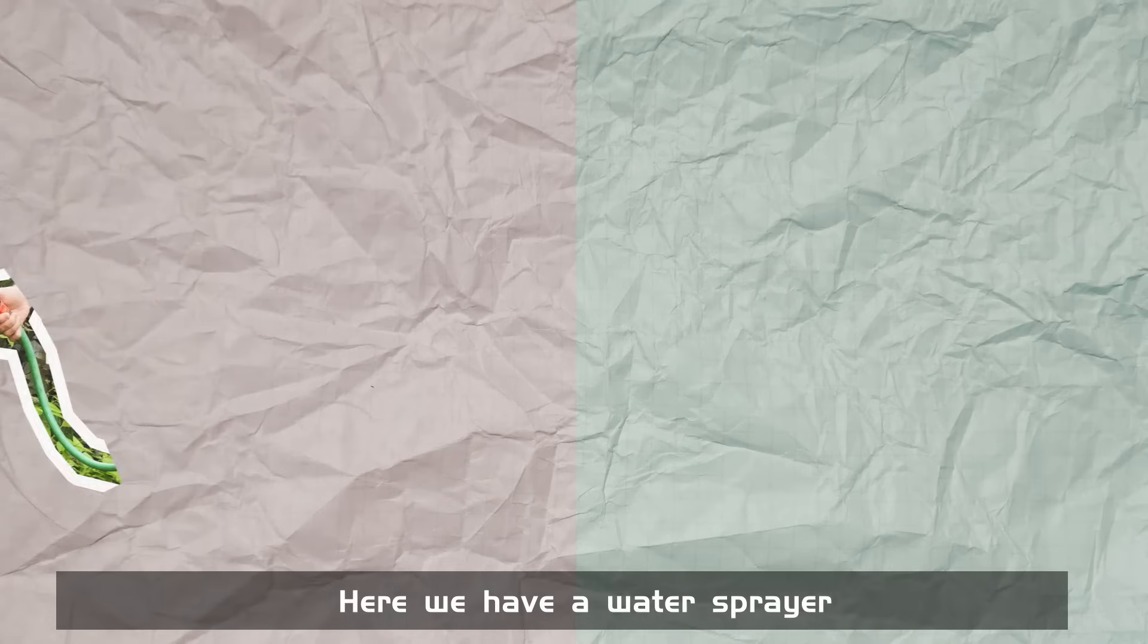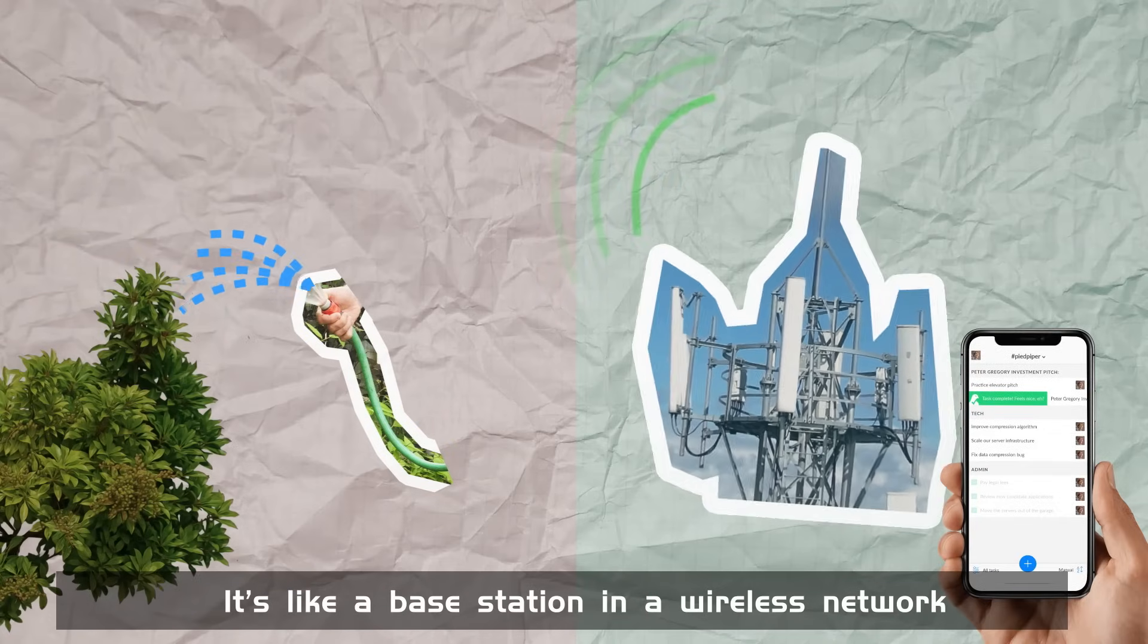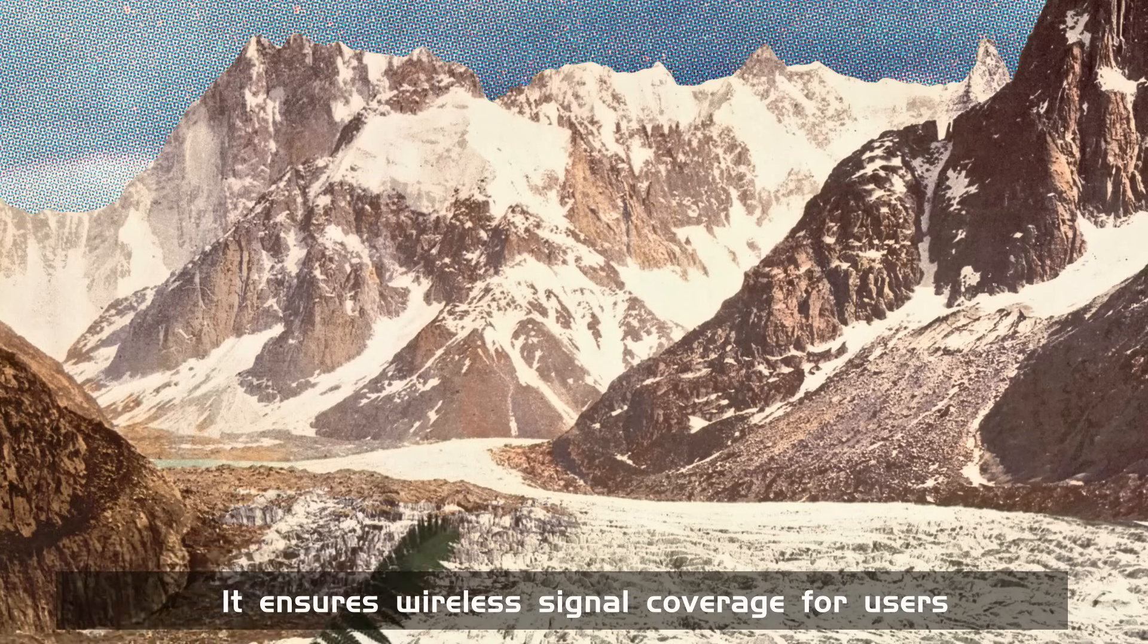Here we have a water sprayer. It's like a base station in a wireless network. It ensures wireless signal coverage for users.